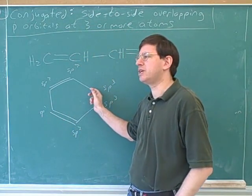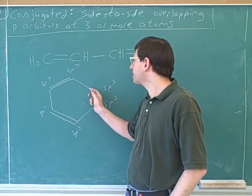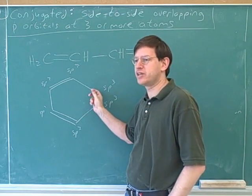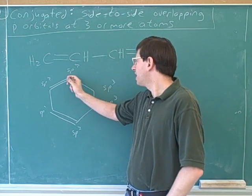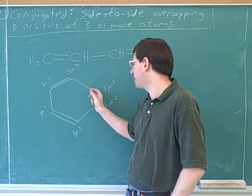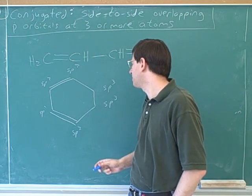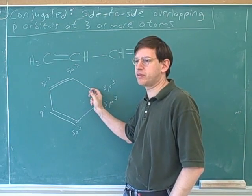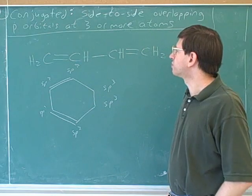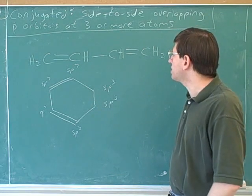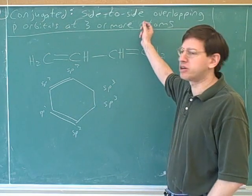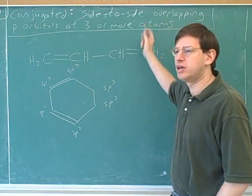Now how do we know these are SP3? How do we know the exception doesn't apply here? Because, as you were saying, there's no lone pairs. This is adjacent to an SP2, but has no lone pairs. So here we just followed the normal rule, and we would call this an SP3. But remember, the rule for conjugation is side-to-side overlapping p-orbitals at three or more atoms.